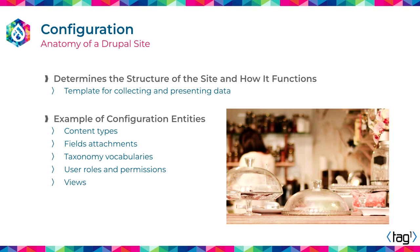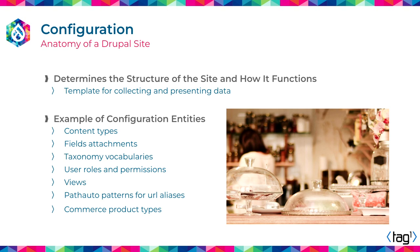Depending on the set of modules that you have — let's say you are an e-commerce platform selling products — you will have commerce product types, and also URL alias patterns that are easy to remember. The pattern itself that is going to be followed every time that you create a new piece of content, that is configuration in Drupal.